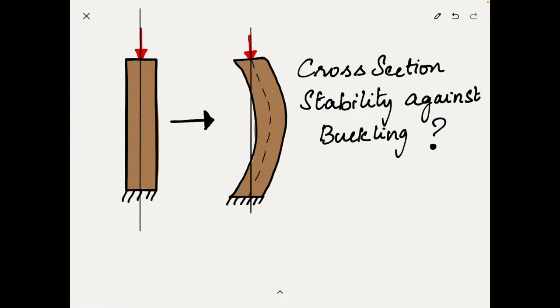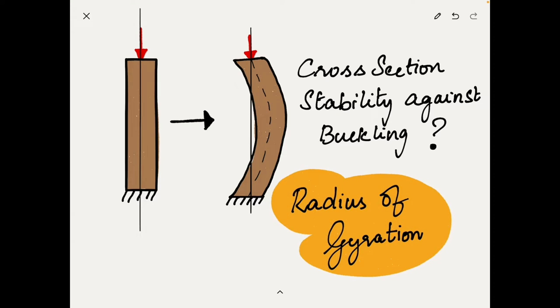But is there a way to quantify or measure this stability from the cross section? The answer to this question is radius of gyration. Radius of gyration is the measure of elastic stability provided by the cross section area of a structure against buckling.